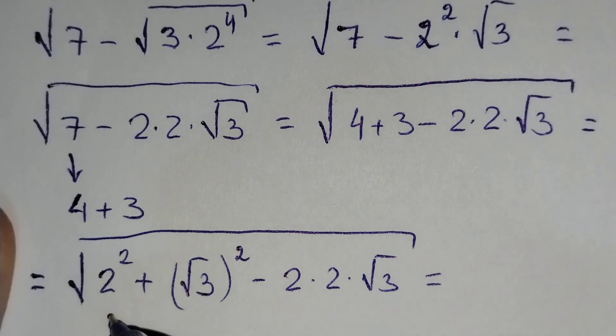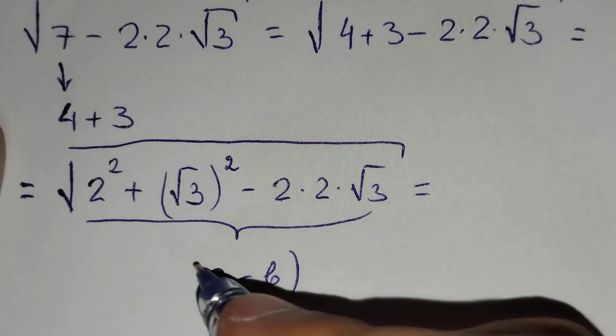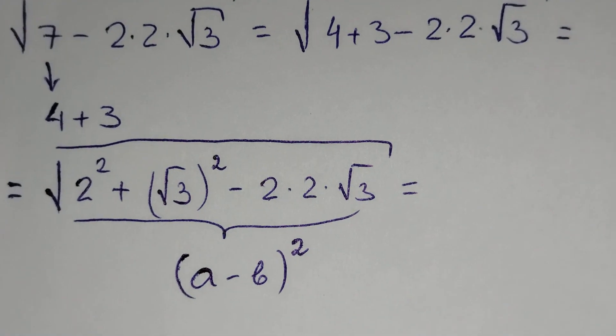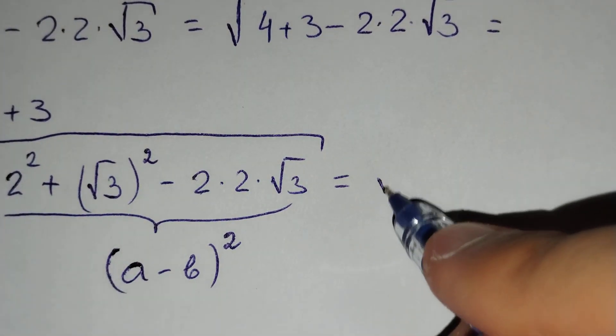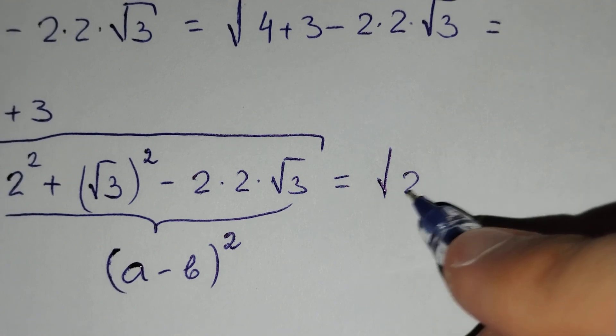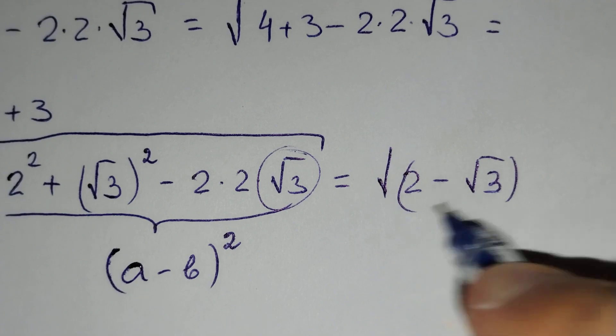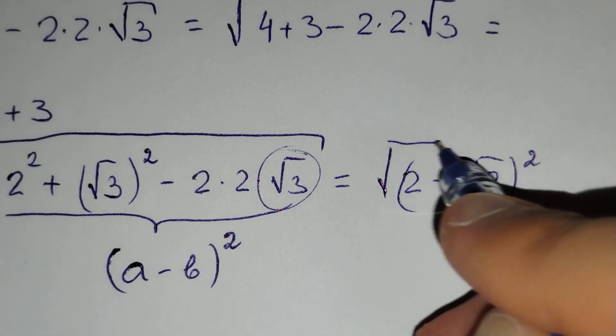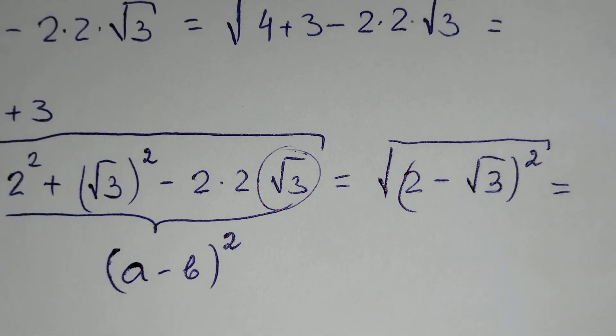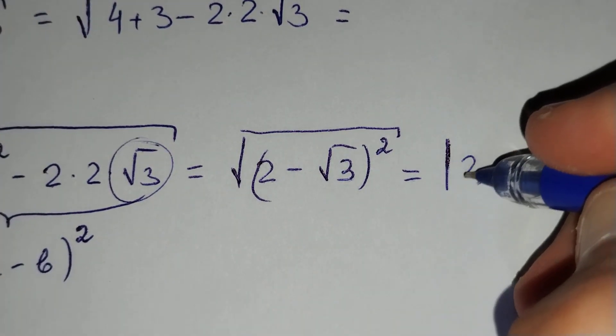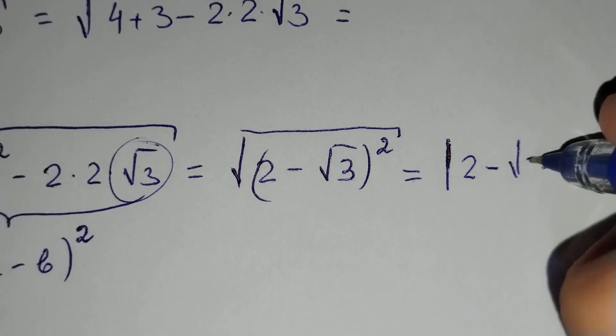And this is a minus b brackets power 2. Square root of 2 minus square root of 3 power 2 and this is equal to the absolute value of 2 minus square root of 3.